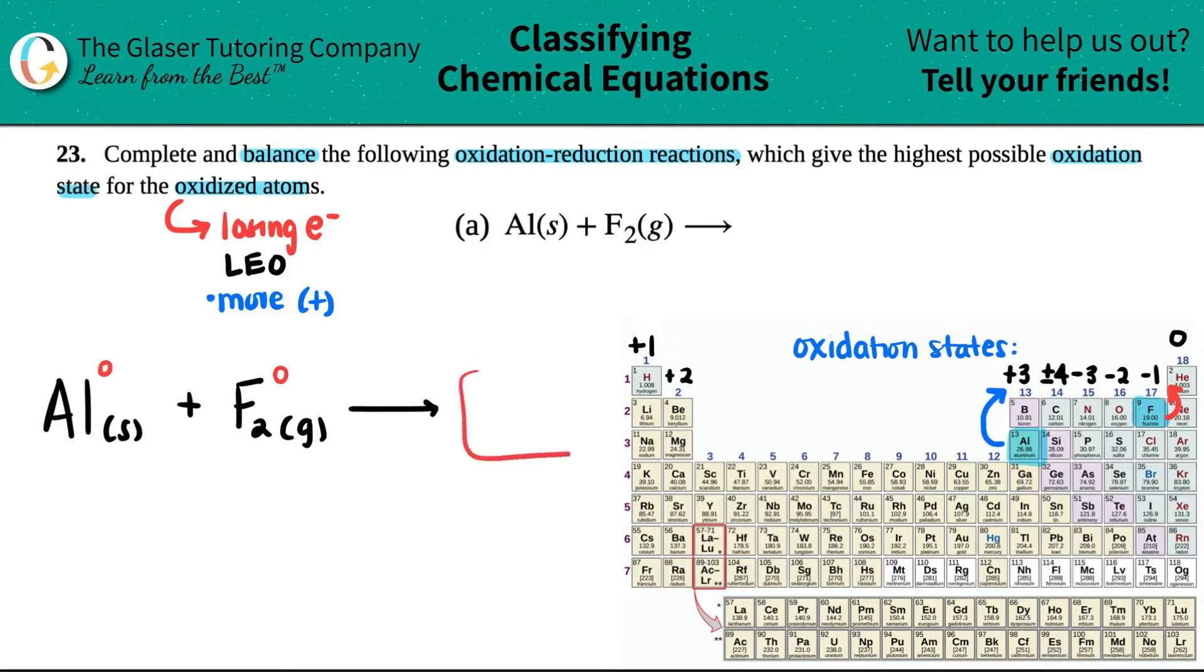Now, when they make that compound, one has to be oxidized and the other one has to be reduced. And maybe I'll just put it up here: aluminum was a zero and the fluorine was a zero. Now, who's going to be oxidized and who's going to be reduced? The oxidation one, LEO, is the one that goes to being more positive. And looky here, aluminum, when it's a compound, wants to be a plus three.